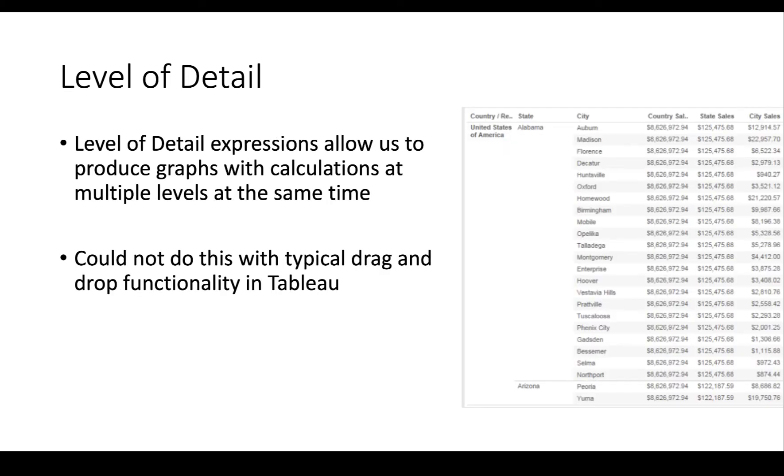Level of detail expressions allow us to produce a graph like we see here on the right, where we have city sales and state sales and country sales all being calculated at the same time. If we put country, city and state into a visualization and then we drop sales in, it will always by default be the lowest level of detail, which is the city sales. And we'll build that so you see how that works in a later video.